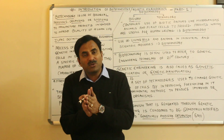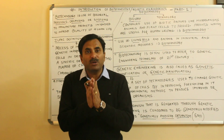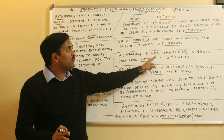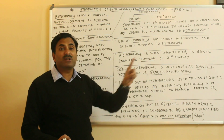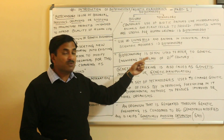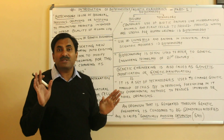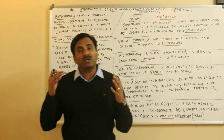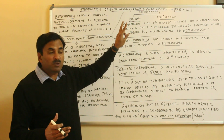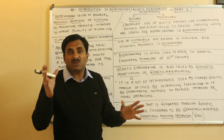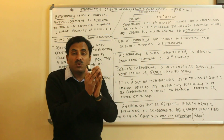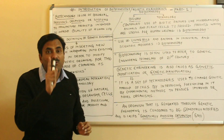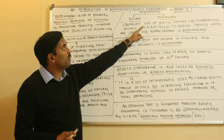We will only be dealing here with modern biotechnology. Before starting, I would like to say that biotechnology is often used to refer to genetic engineering technology of the 21st century. Now the question arises: what is biotechnology? Biotechnology is actually composed of two words — biology and technology. Biology means living, so biotechnology means the controlled use of living organisms with the help of technique.